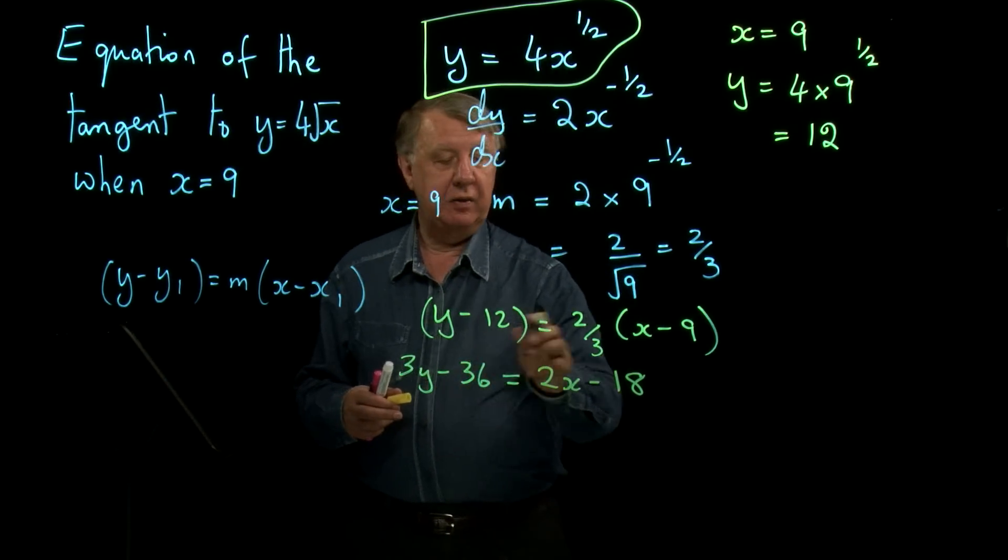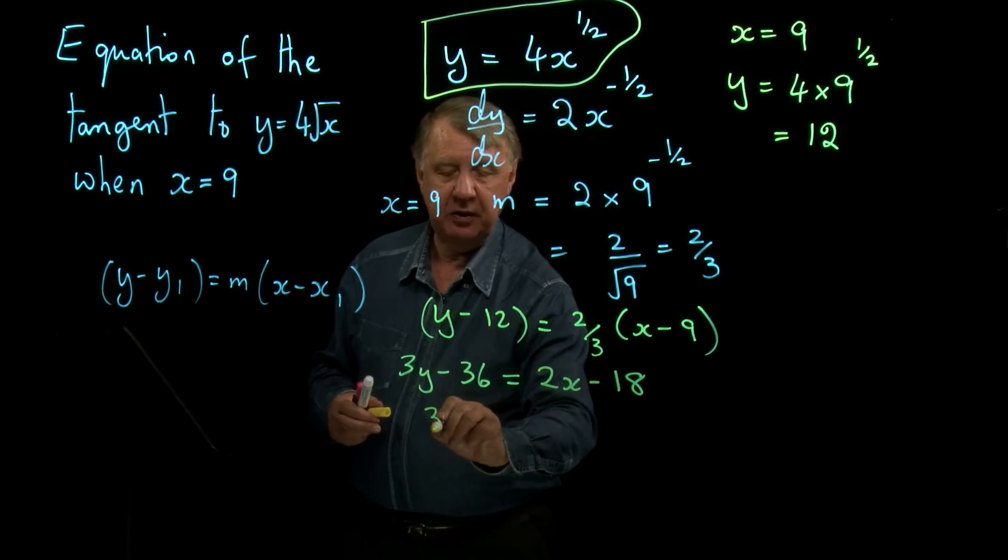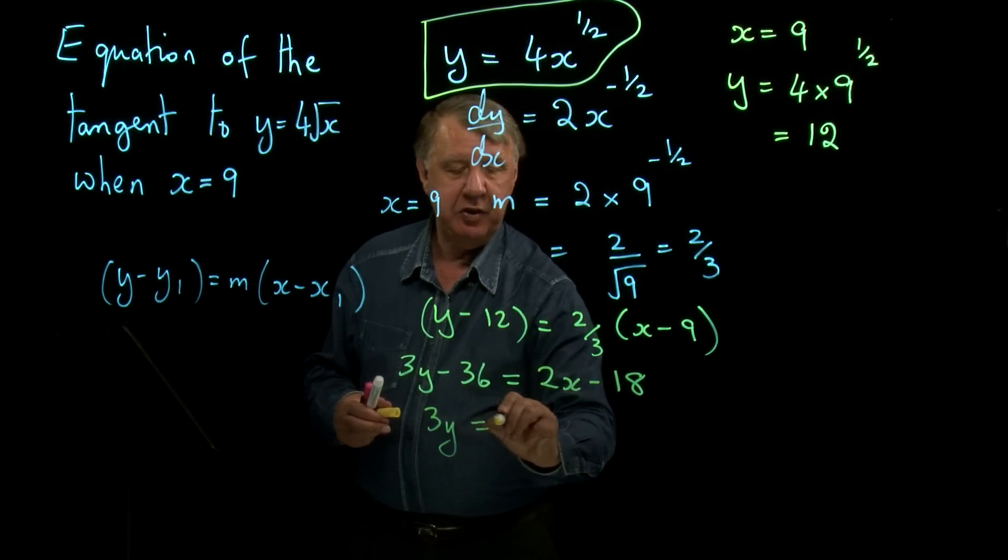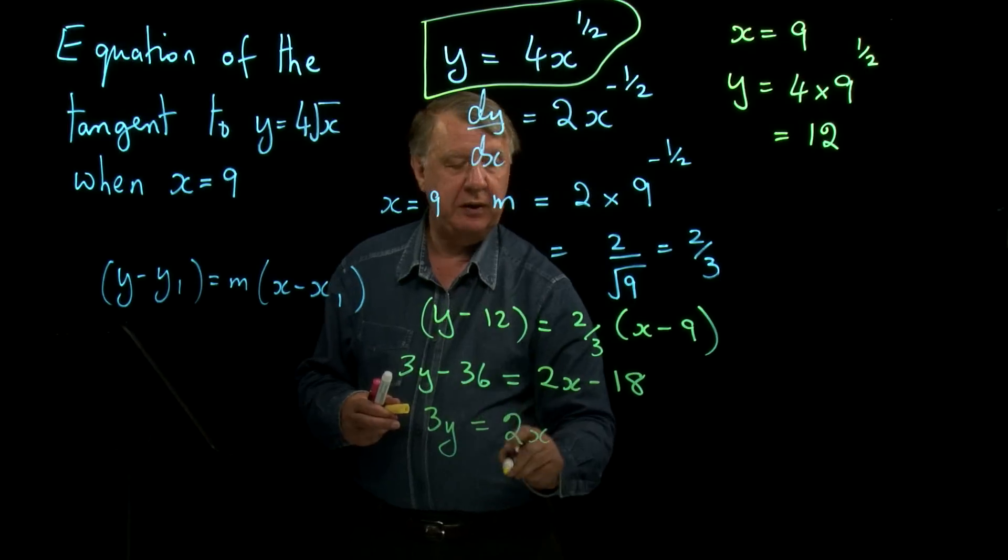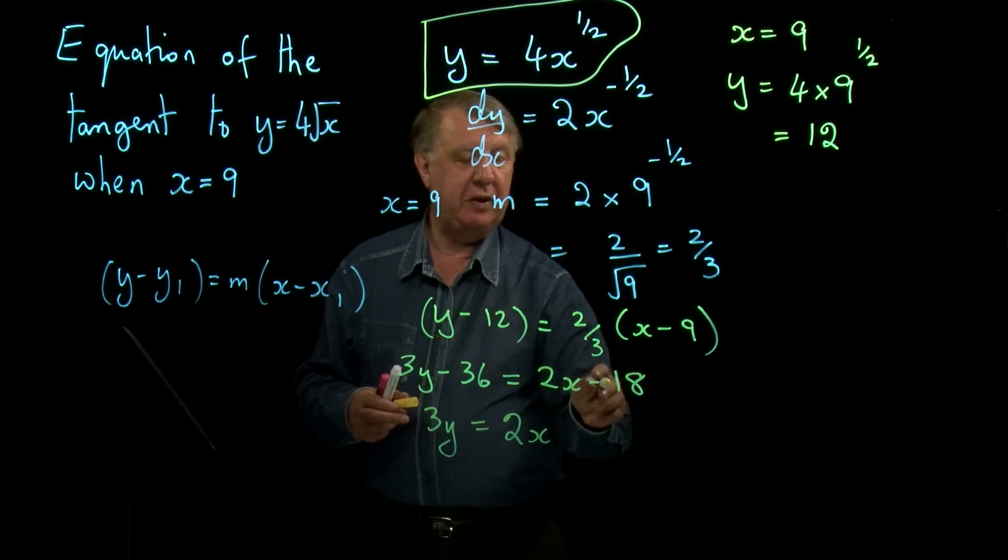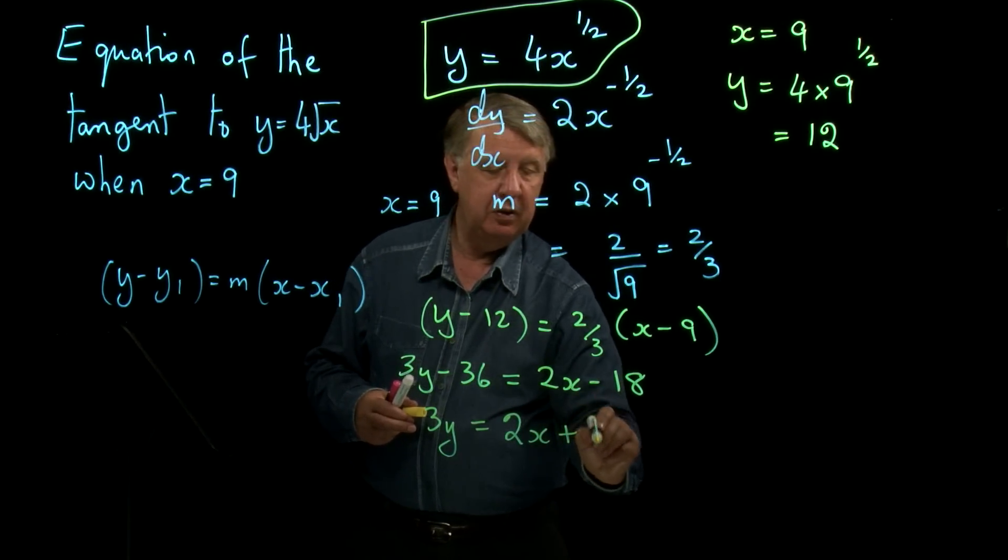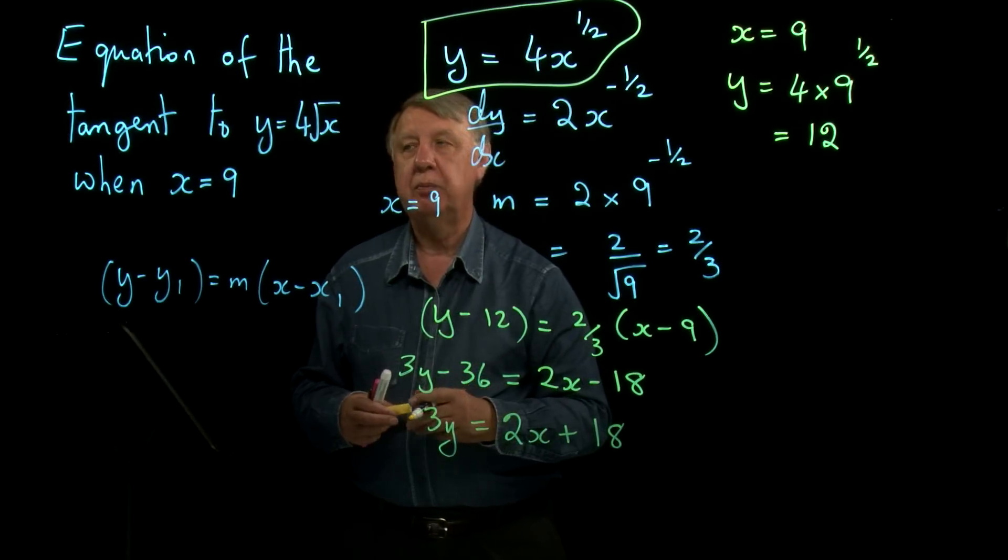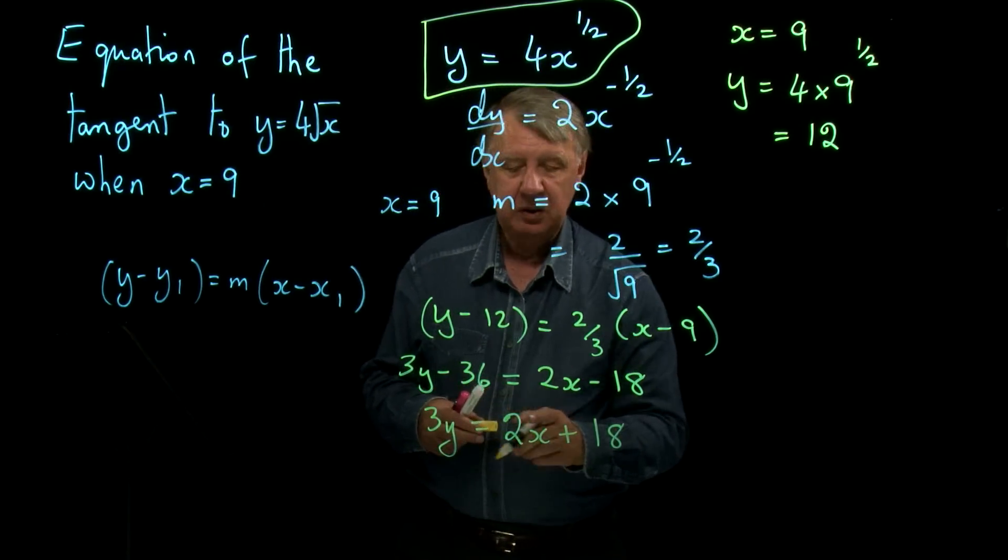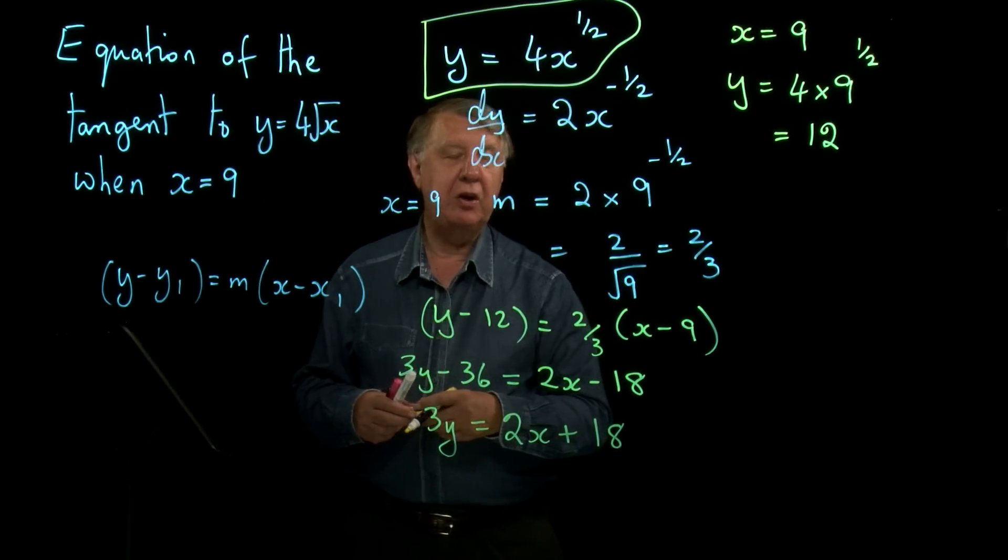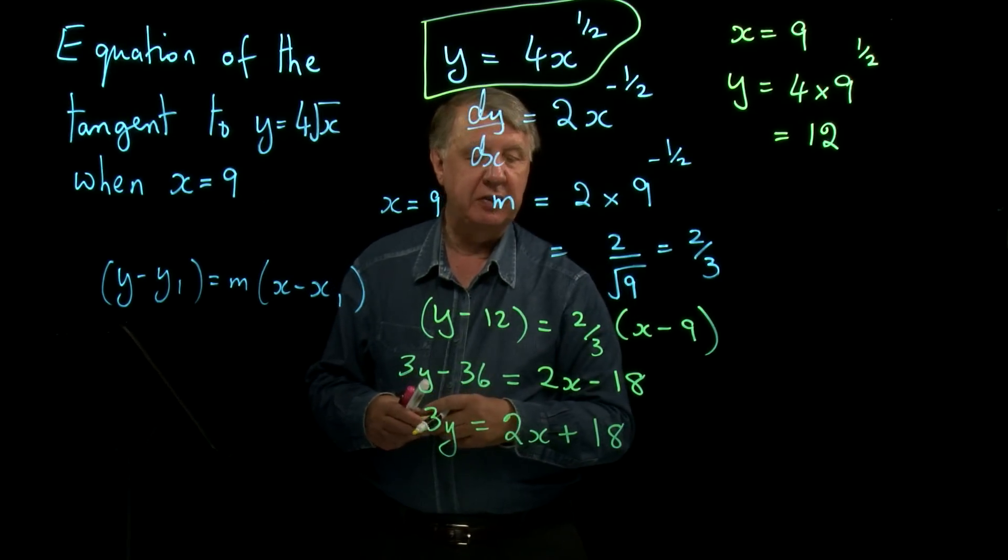I'll add the 36 onto the other side, so the final answer: 3y equals 2x plus 36 minus 18 is plus 18. And that's probably a nice form of the answer to leave it.